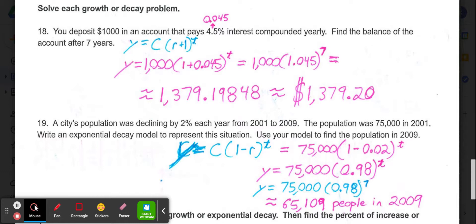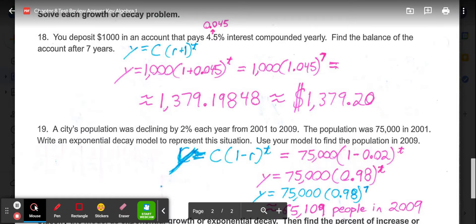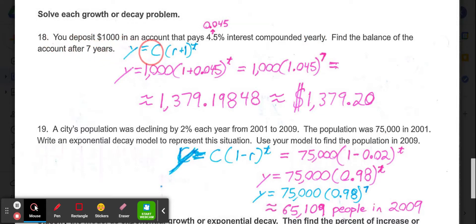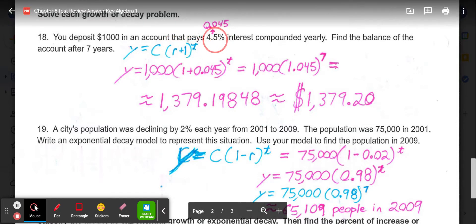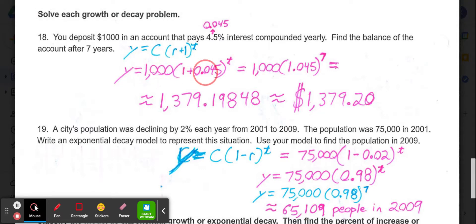Then moving on to our last few problems, we're looking at exponential growth or decay. So right away, first problem is depositing $1,000 into an account that pays 4.5% interest compounded yearly, so we find the balance after 7 years. So remember, our growth formula is y equals c, and in parentheses r plus 1 to the t power. Now remember, for r you need the percent written as a decimal. So instead of 4.5, it'd be 0.045. 1,000 goes in for c, 7 goes in for t. So we'd have y equals 1,000, then in parentheses 1 plus 0.045 to the t power. So 1,000, then in parentheses 1.045 to the 7th power.